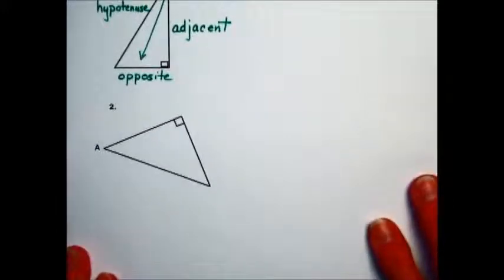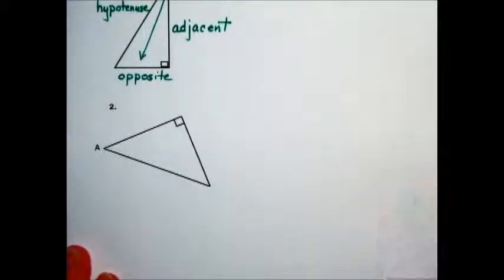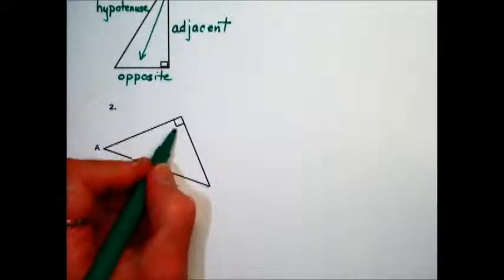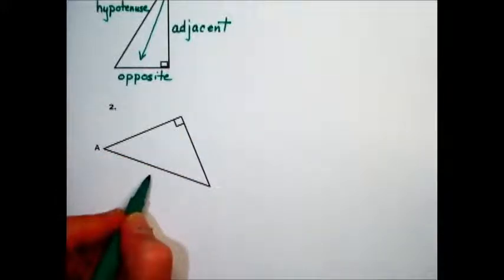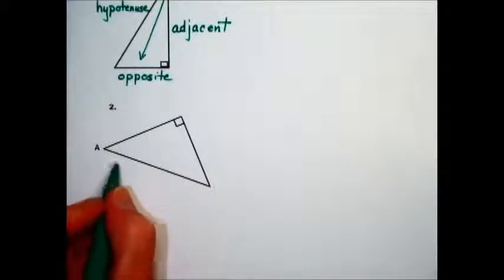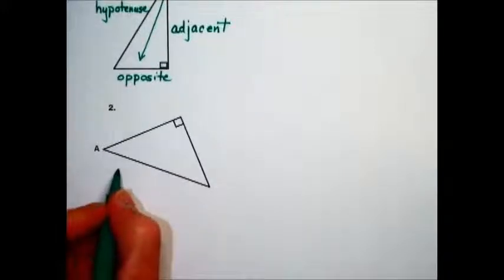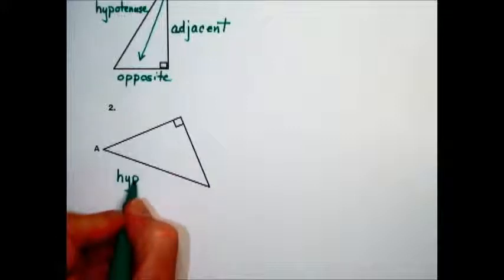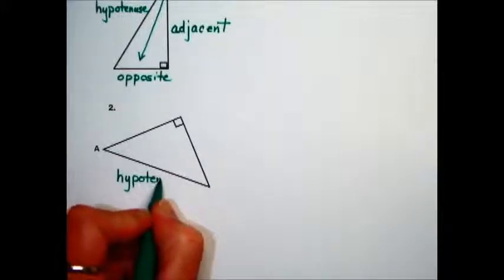Problem number two is asking us to do the same procedure. First thing we want to do is always label the hypotenuse. The hypotenuse is the longest side in a right triangle. It is opposite the right angle. So this length here is the hypotenuse of this right triangle.